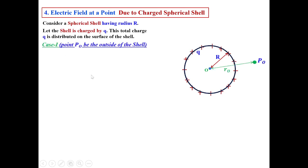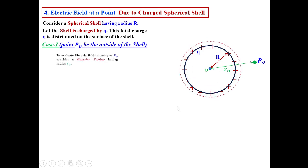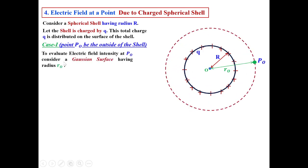Case 1: if the point P is situated outside of the shell, named P_O (O for outside). To find the electric field intensity at this point, we consider a Gaussian surface having radius R_O. We can then apply Gauss law.